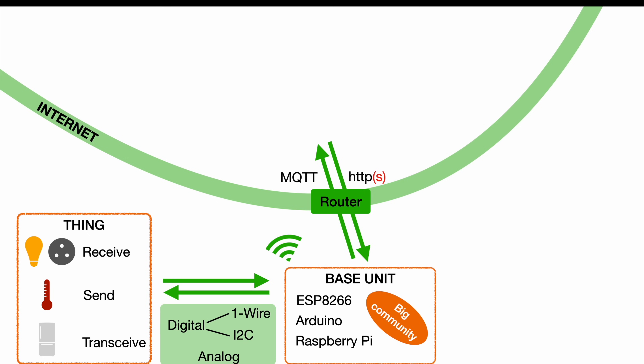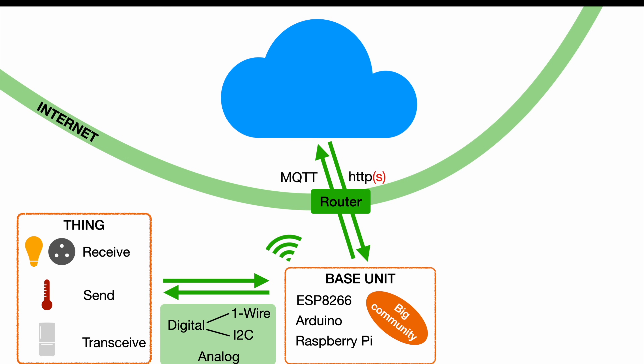So we finally made it to the Internet and can talk to a cloud now, which is basically just a fancy word for a server connected to the Internet. This server may host a database where you can store your sensor data, and you can access this server via its IP address, which will look something like this. Since we want to use MQTT, we also need a so-called MQTT broker who will manage all our MQTT messages. This broker can, but doesn't have to, sit on the same server as our database.